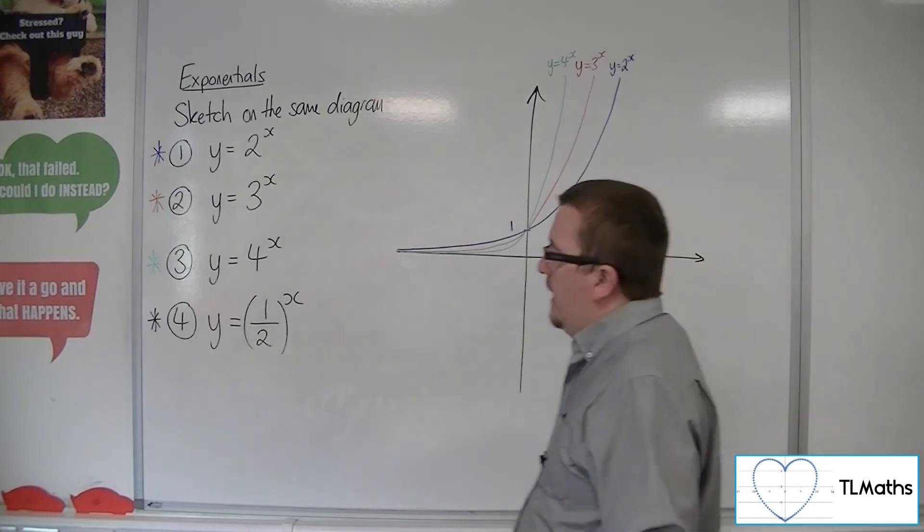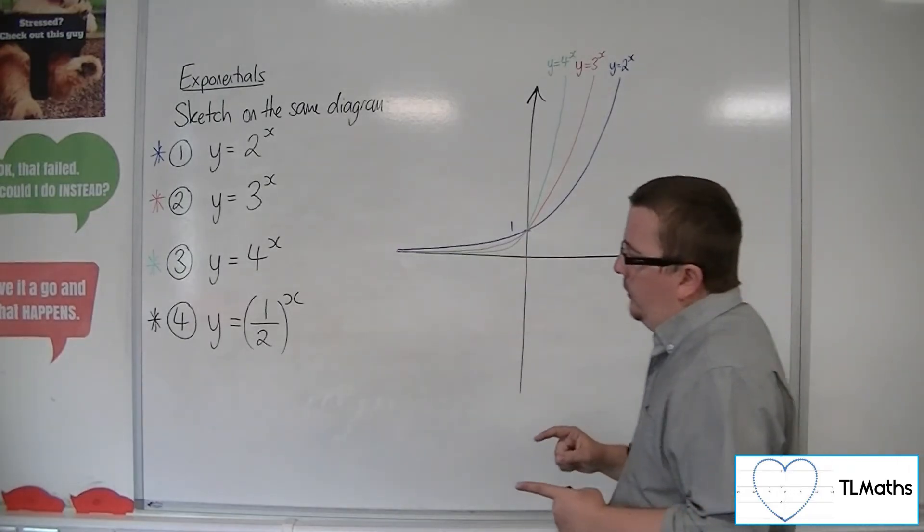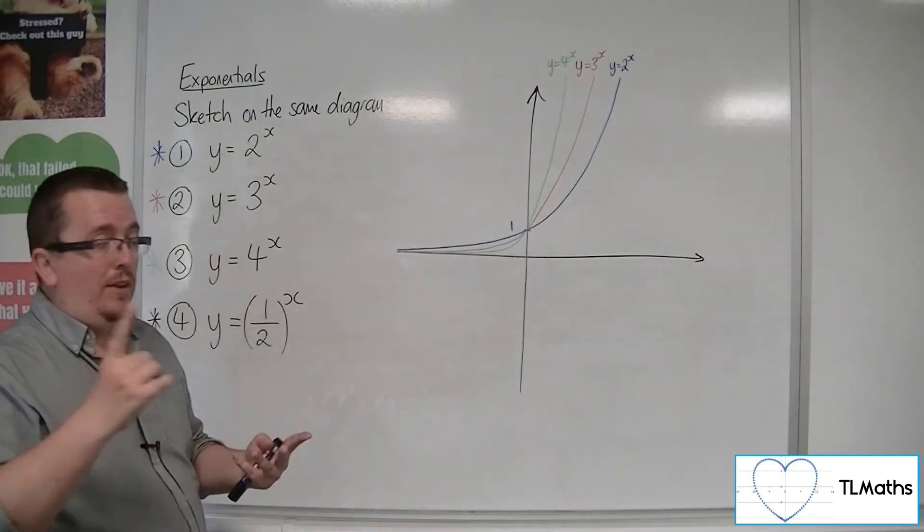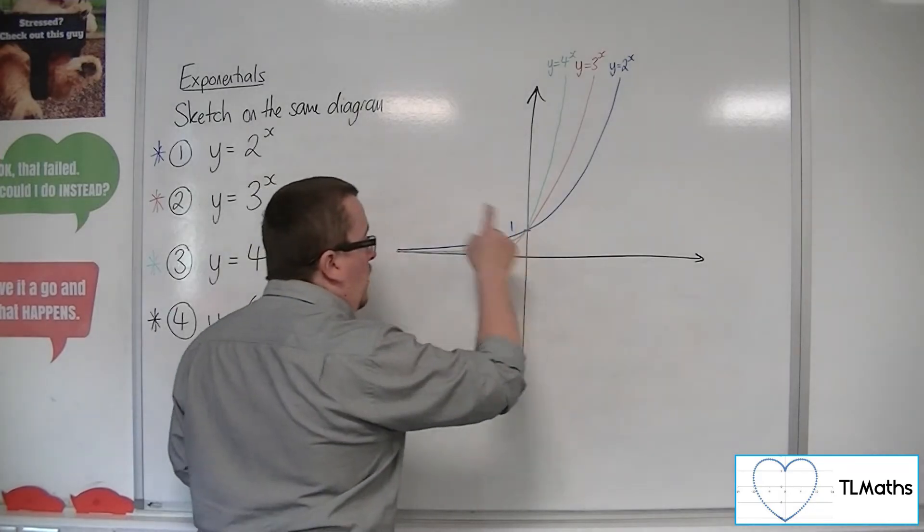Now, how about this 1/2 to the x? As x is increasing, well, when x is 0, let's start with that, we're going to get 1/2 to 0, which is 1. So we do know that it still goes through 1.